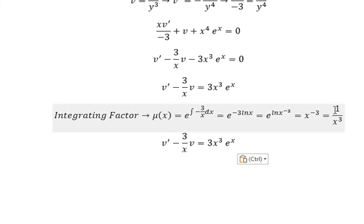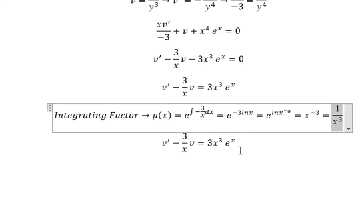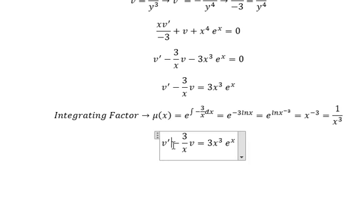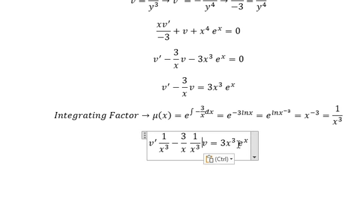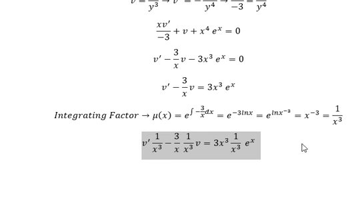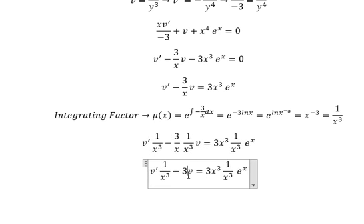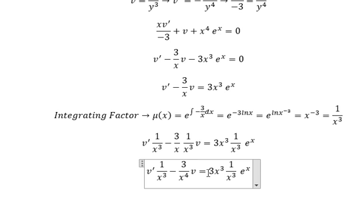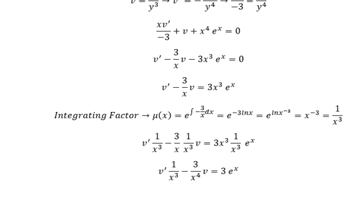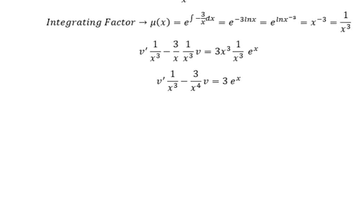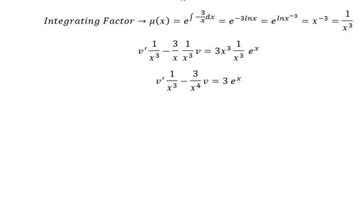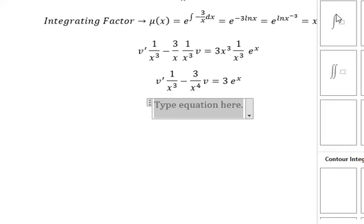Next, we multiply both sides by this integrating factor. So this one we have negative number 3 over X to the power of 4. This one we simplify. Next, we put the integration for both sides.